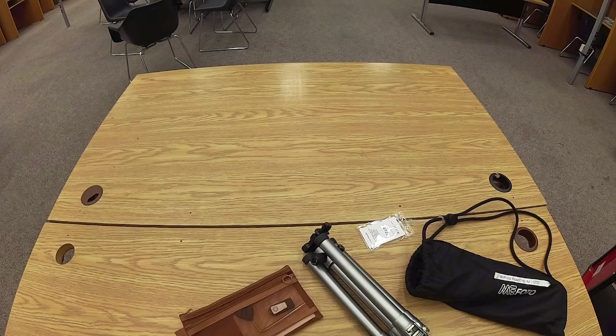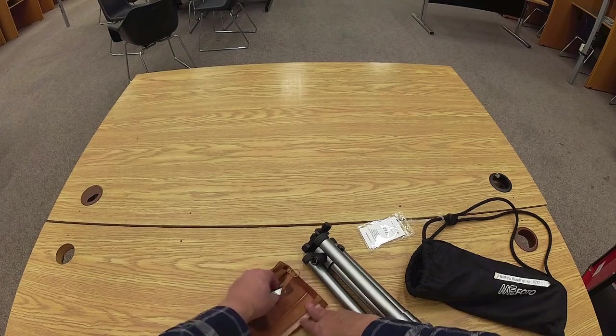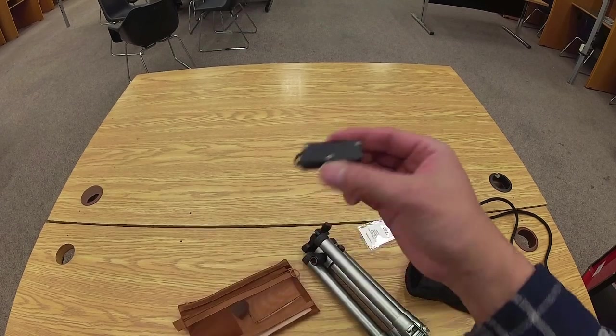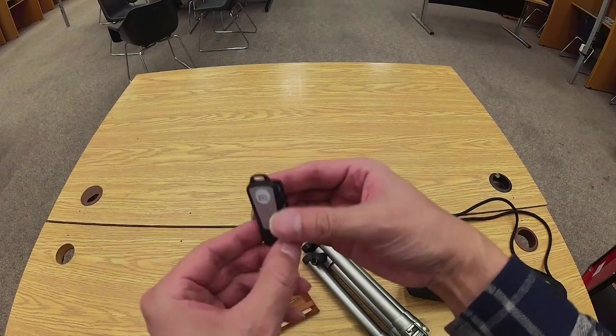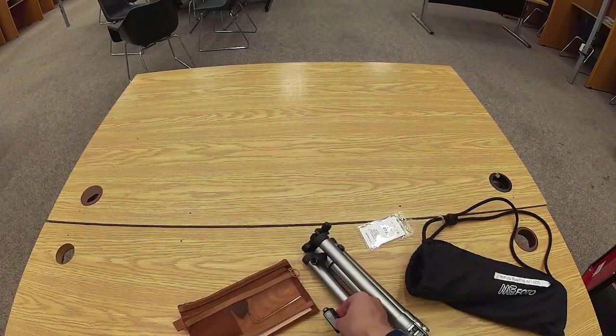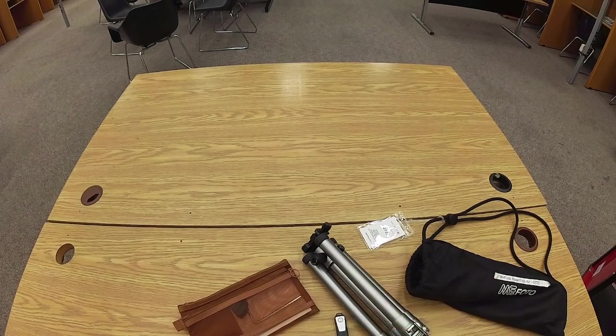Item four is a Bluetooth remote. This doesn't have a charge, but if you have a micro USB cable, you can charge it and then pair it with your smartphone if you're using a smartphone to record.